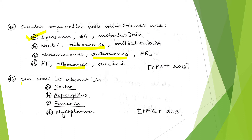The next question: cell wall is absent in Nostoc, Aspergillus, Funeria, or Mycoplasma? It is also a very common question. Mycoplasma is the correct answer. In the case of Mycoplasma, there is no cell wall — it is a bacterium without a cell wall. So the correct answer is option D.